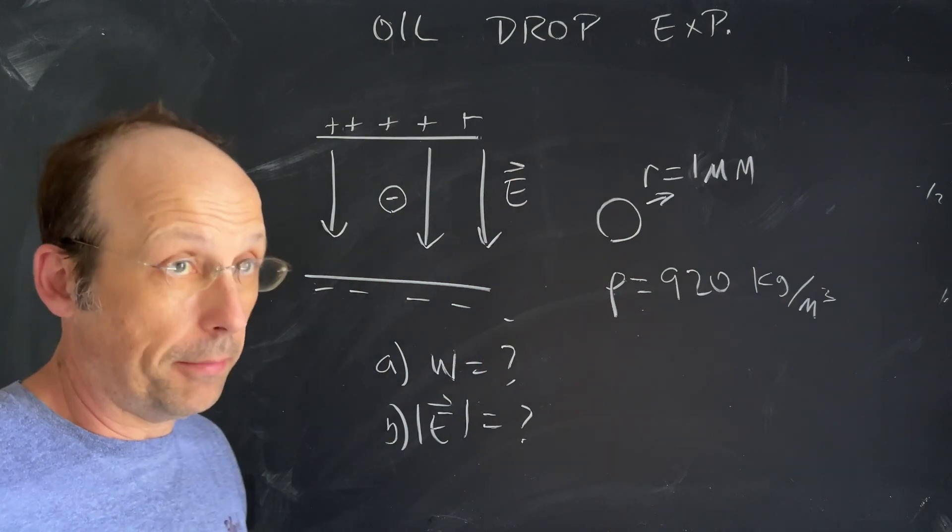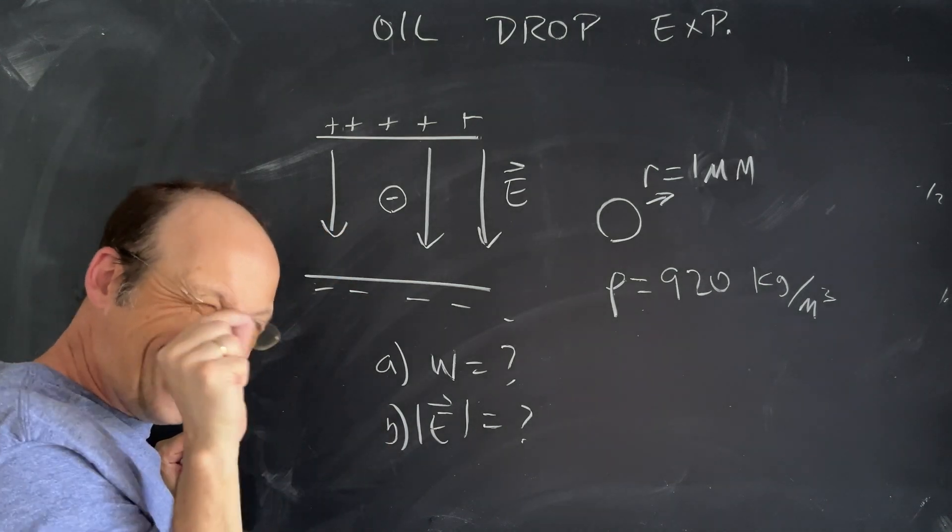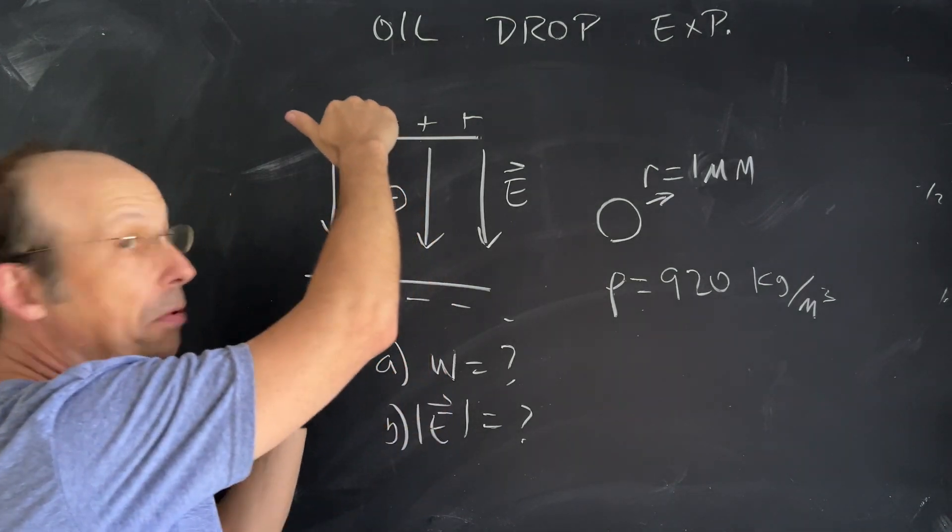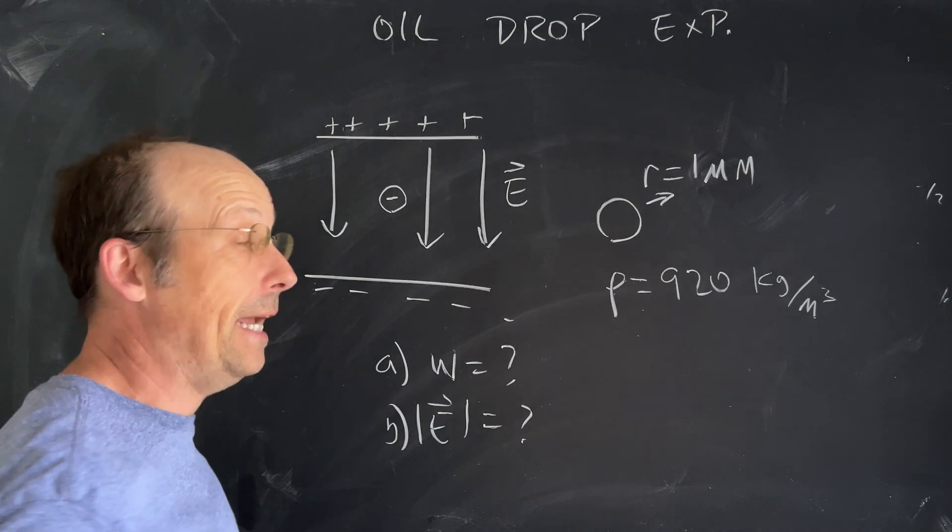Millikan did this a long time ago and here's what he did. He took a tiny, tiny, tiny drop of oil and squirted it into two plates with opposite charges. These charges made an electric field.